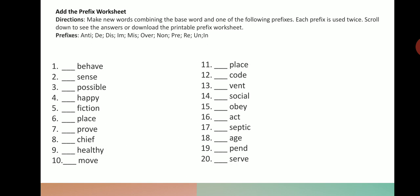Now we have an exercise where we need to add prefixes to 20 given words. The prefixes to choose from are: anti-, de-, dis-, im-, mis-, over-, non-, pre-, re-, un-, in-. For example: 'regularly' becomes 'irregularly'; 'comfortable' becomes 'uncomfortable'; 'organized' becomes 'disorganized.' We choose the correct prefix from the given options only.